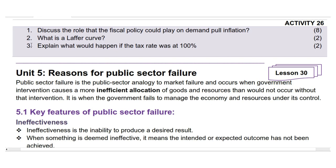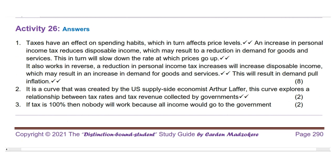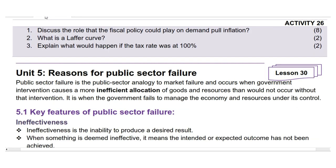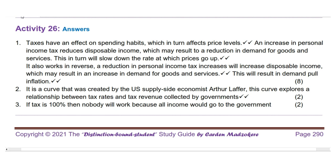Question 1: Discuss the role that fiscal policy could play on demand-pull inflation. (8 marks.) Taxes have an effect on spending habits, which in turn affects price levels. An increase in personal income tax reduces disposable income, which may result in a reduction in demand for goods and services. This in turn will slow down the rate at which prices go up. It also works in reverse — a reduction in personal income tax will increase disposable income, which may result in an increase in demand for goods and services, resulting in demand-pull inflation.